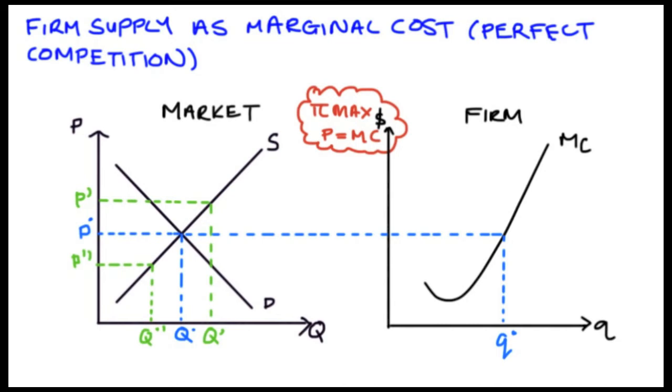Okay now so it's going to do this for any price that the market throws at it. So let's just say that we experience an increase in demand. Well the price has increased now to p prime. How is the firm going to react? Well it's going to set its quantity such that p prime is equal to marginal cost so the firm is now going to start producing q prime.